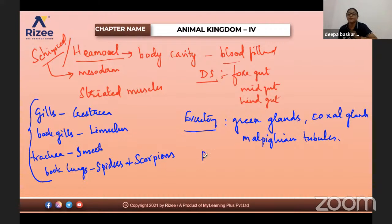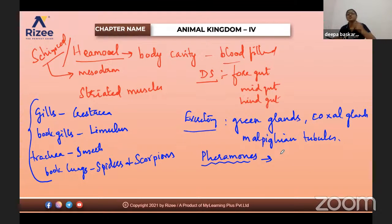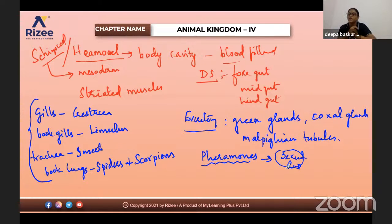Some insects secrete pheromones. Pheromones have aroma and are helpful in the mating process — some insects produce pheromones to attract the opposite sex, helpful in sexual reproduction. They are mostly oviparous and very few are viviparous. Sensory organs: antennae, simple or compound eyes. Apart from that they have tactile receptors and chemoreceptors. Chemoreceptors help to identify toxic substances present around the animal.